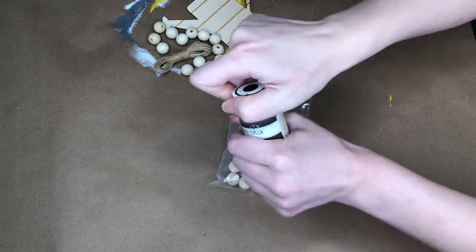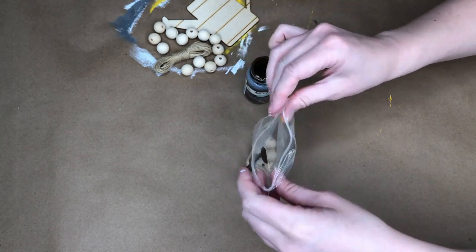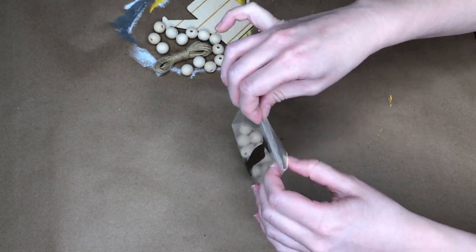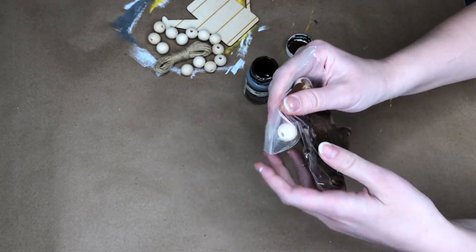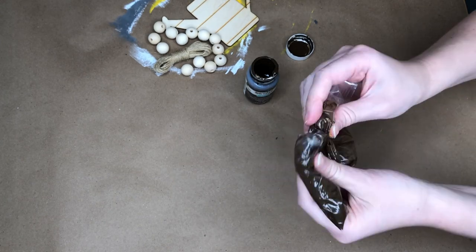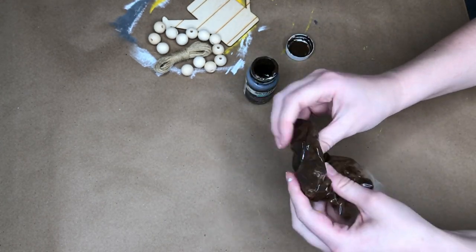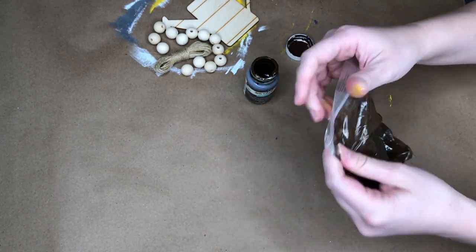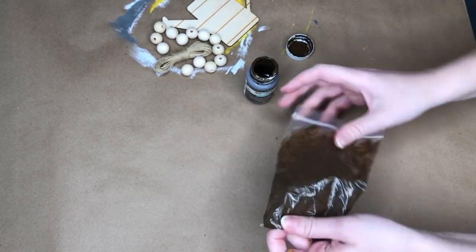I purchased this kit from Lismore Decal and Decor. She has an amazing wood cutout website and I thought this one was really cute and I love bead garland so I went ahead and purchased it and I just split up the wood beads. Half of them I'm going to leave natural and half of them I put into this plastic baggie with some drops of dark brown stain and I'm just kind of squishing and shaking the beads around in the stain to get them a nice dark brown color.